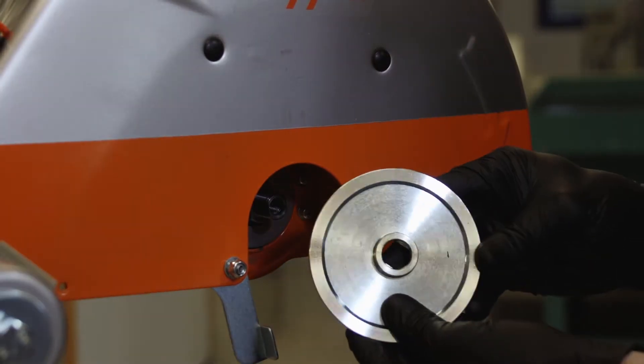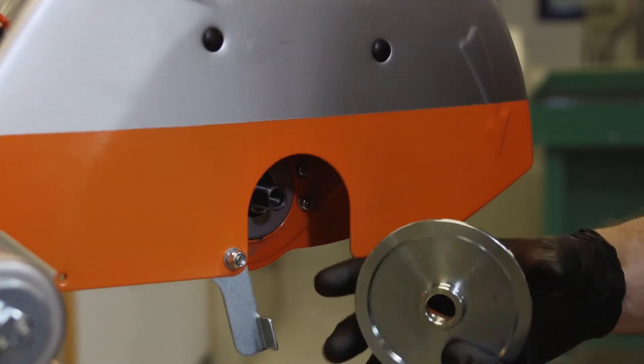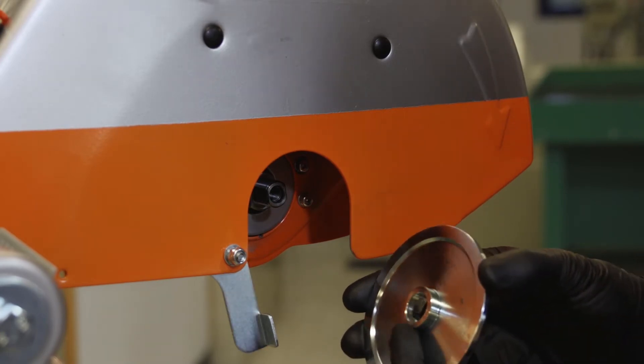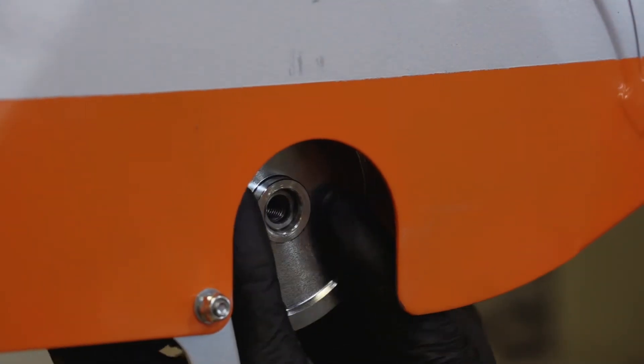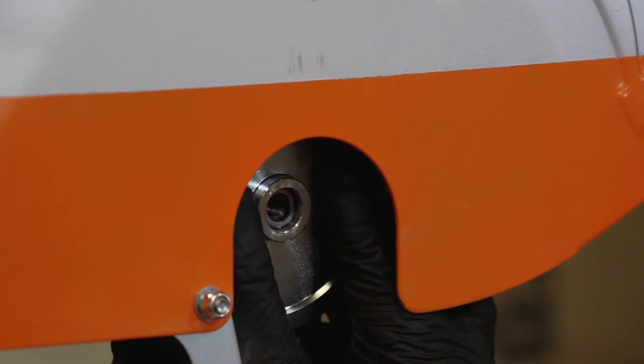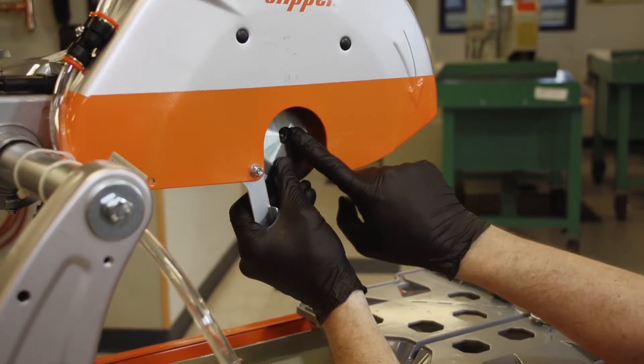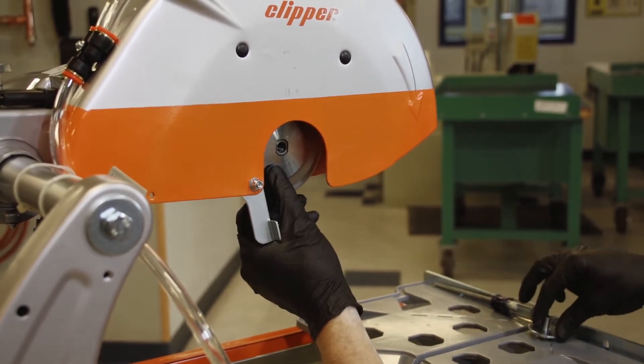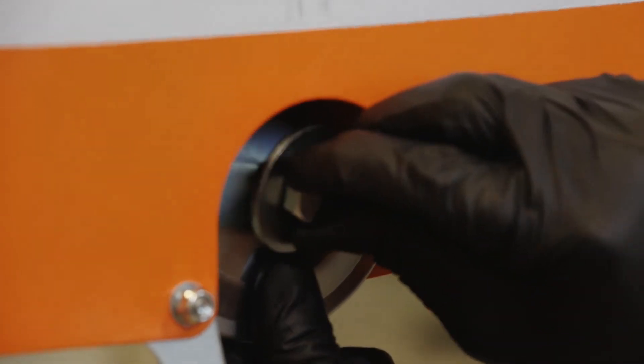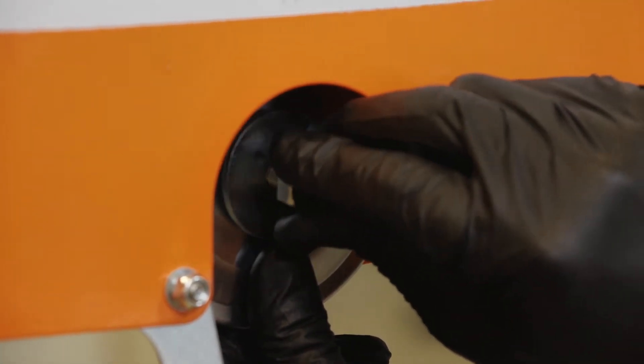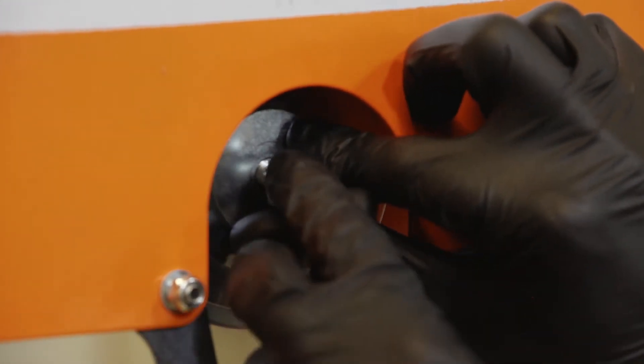Slide the inner collar or flange over the blade shaft. The inner collar is the one with the boss or raised area. Be sure to fully seat the collar onto the blade shaft. Install the outer collar and the blade shaft bolt. Note the blade shaft bolt is a left-handed thread.